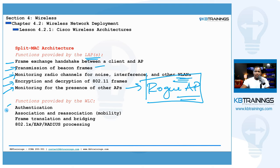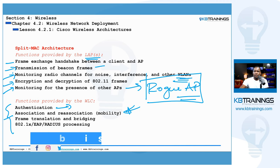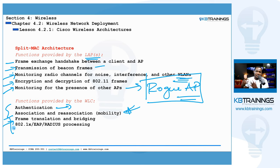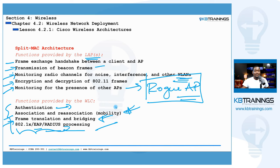The functions provided by the wireless LAN controller include: authentication of devices and users, association and re-association, frame translation and bridging — converting wireless frames into Ethernet for your wired network — and security functions like 802.1x, EAP, and RADIUS. That's why it's called split-MAC: the functions are split between the WLC and the lightweight access point.